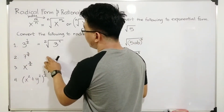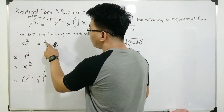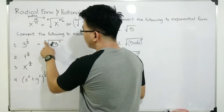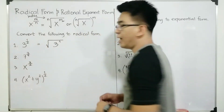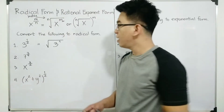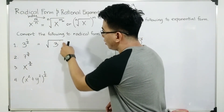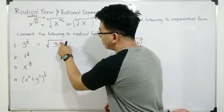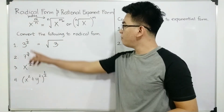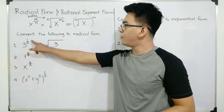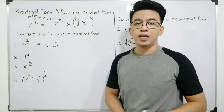In our case, in the radical expression, if the index is 2, you need to make this 1 be invisible — you don't need to write 2 as your index. And same with this one, if the exponent is 1, you need to make this invisible as well. So the converted form of 3 raised to 1/2 in radical form is equal to the square root of 3.